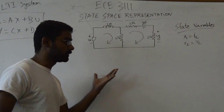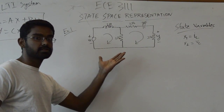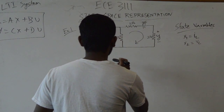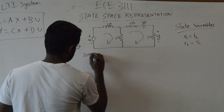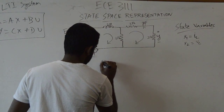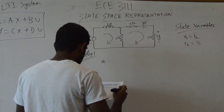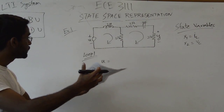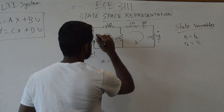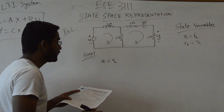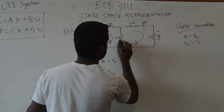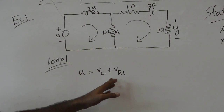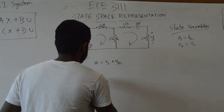Now having defined the states, we need to write the circuit equations using KCL or KVL. I personally prefer loop analysis using KVL. For loop one, I have the input voltage U on one side, and the voltage drops across the inductor V_L, and across resistor R1 on the other side. These should be equal.